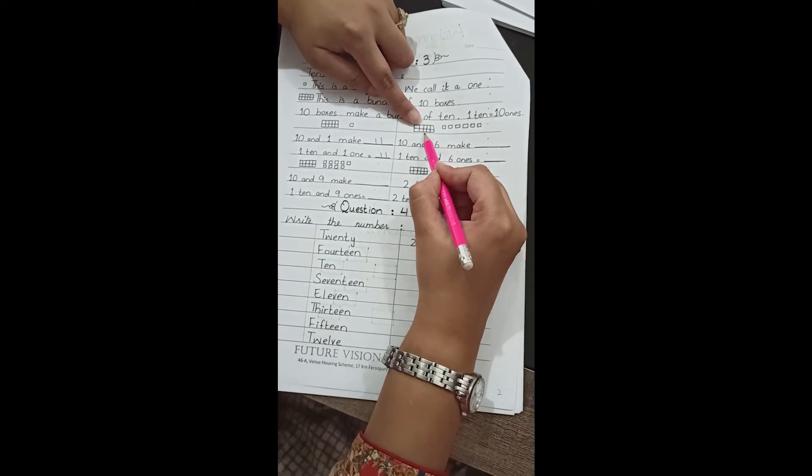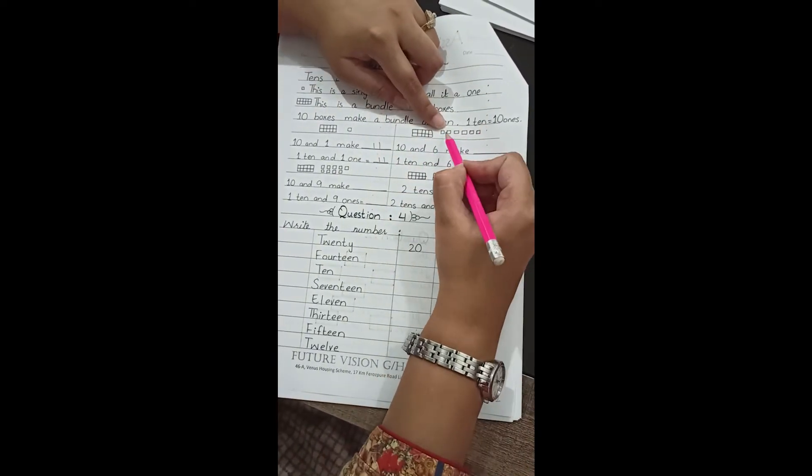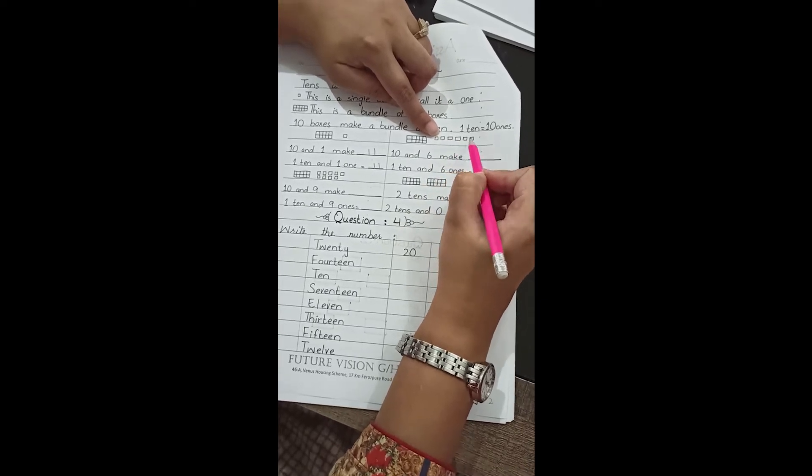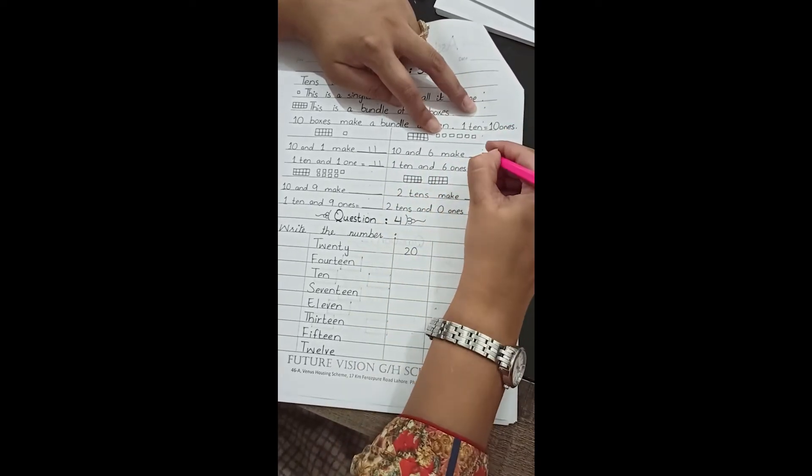Similarly, 1 bundle of 10 and count the ones: 1, 2, 3, 4, 5, 6. 10 and 6 makes 16.